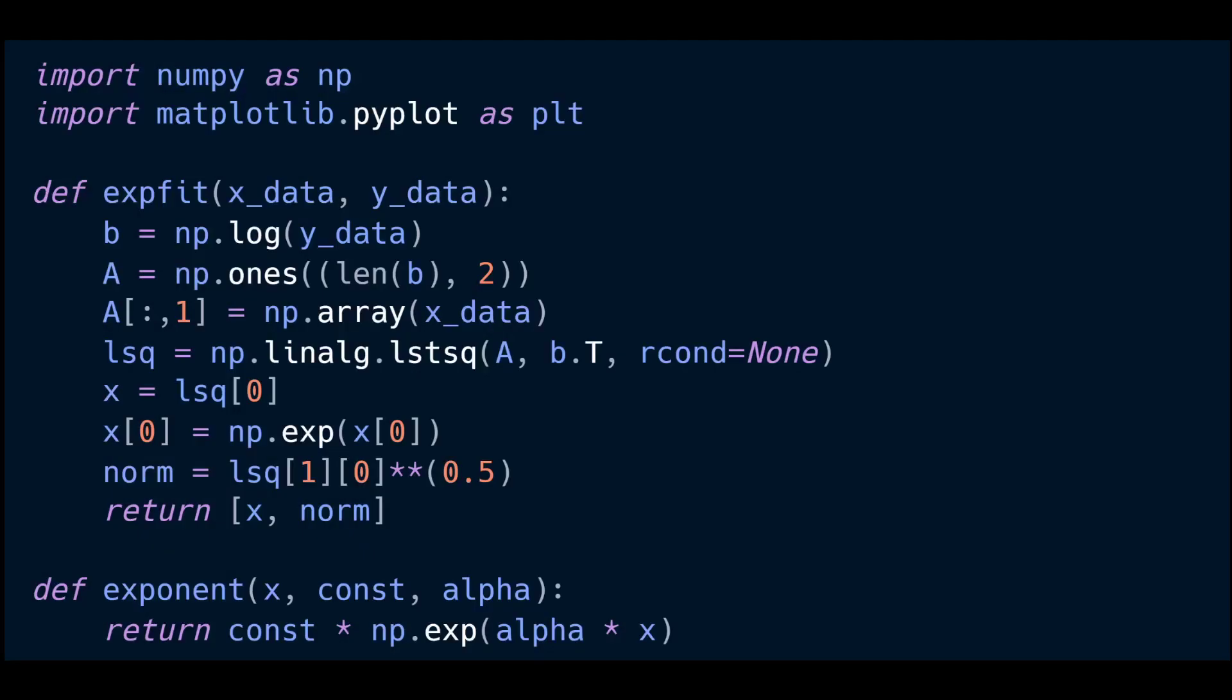And so now we get to coding all this up. We're still just using numpy and of course you can find this code at the github link in the description below. We have two functions here: expfit and exponent. We'll first focus on this exponent function which is pretty simple. It accepts some x data, our c coefficient which I'm calling const here, and our alpha coefficient. Then move into our exponential fit function.